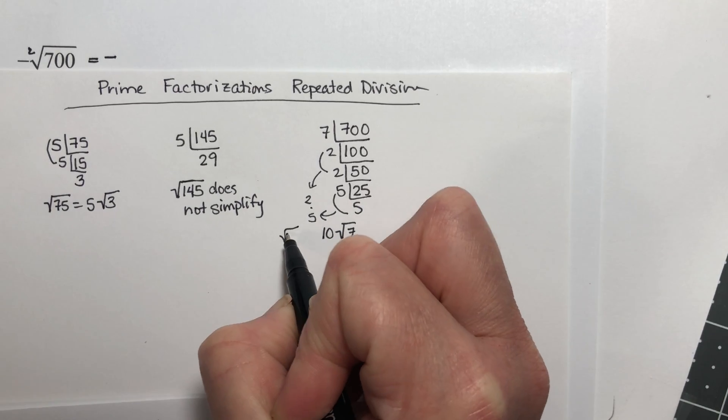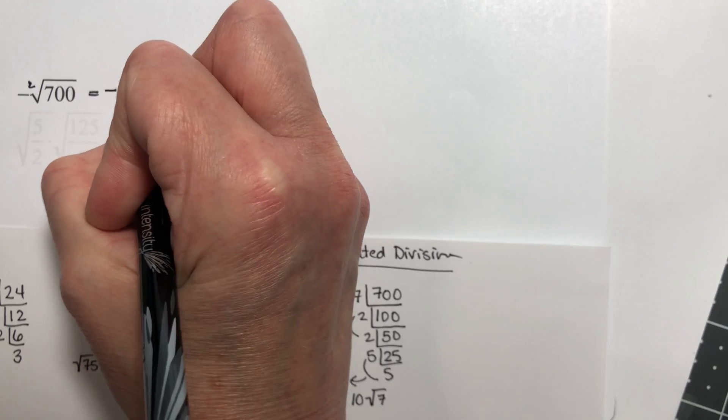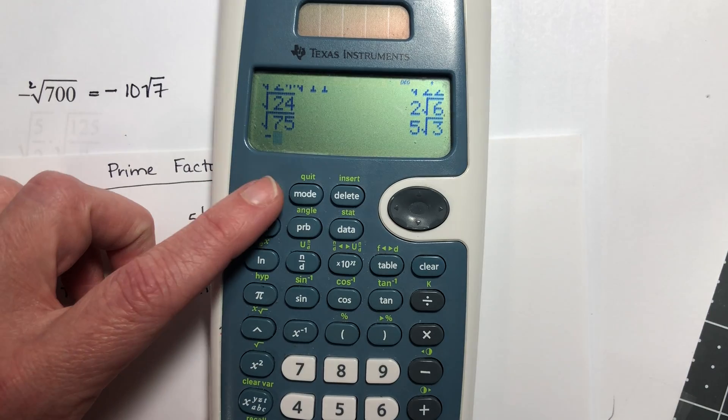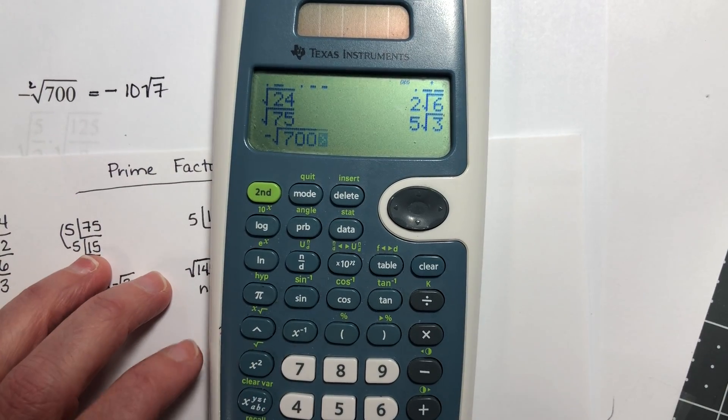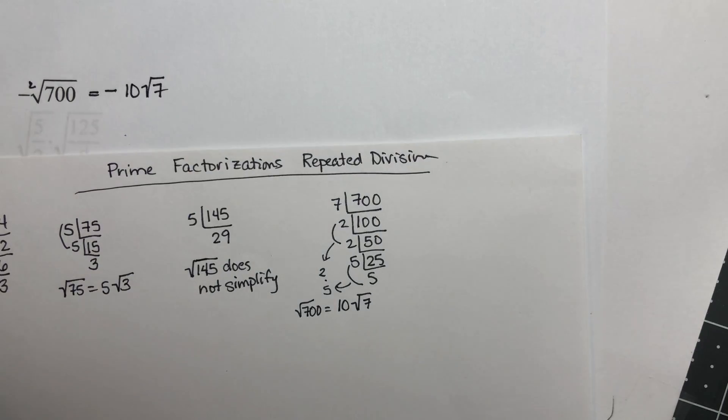So the square root of 700 is 10 times the square root of 7. So negative 10 square root of 7. Negative square root of 700, negative 10 square root of 7.